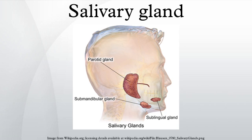Minor salivary glands: There are 800 to 1000 minor salivary glands located throughout the oral cavity within the submucosa of the oral mucosa, in the tissue of the buccal, labial, and lingual mucosa, the soft palate, the lateral parts of the hard palate, and the floor of the mouth or between muscle fibers of the tongue.